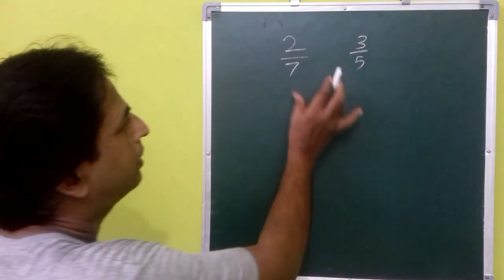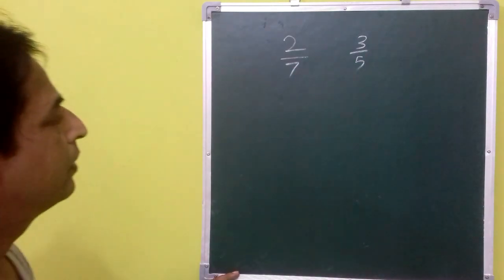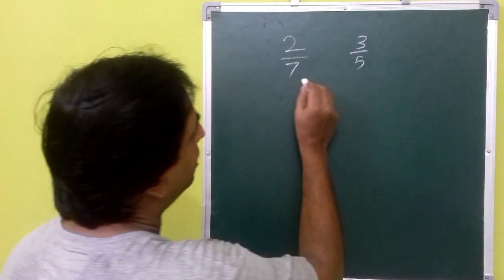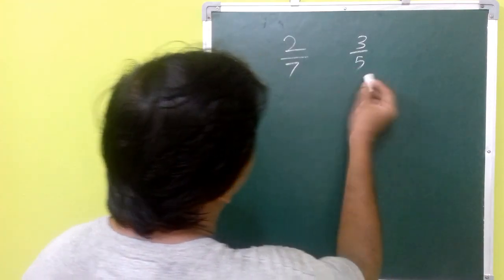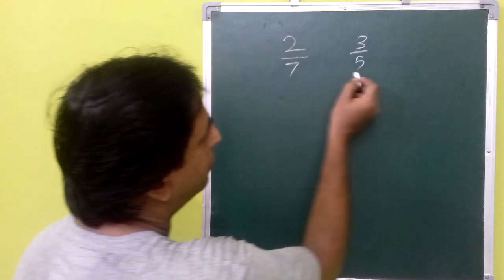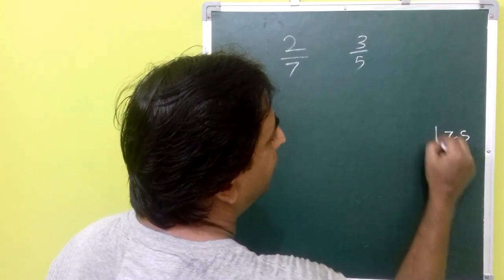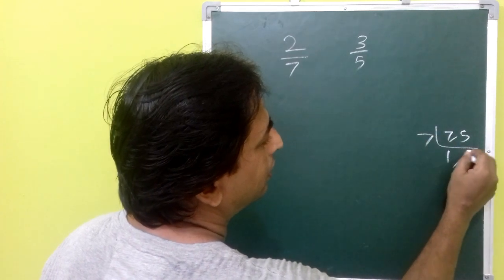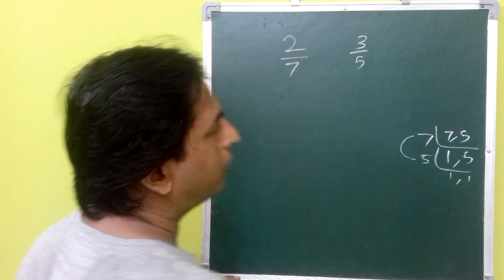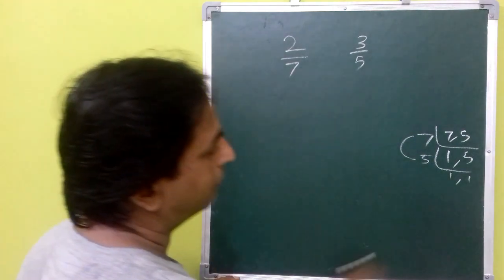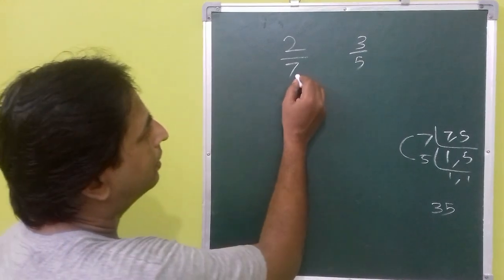Now let's say we need to find ten rational numbers between 2/7 and 3/5. First we need to make the denominators equal, so we find the LCM of seven and five. The LCM of seven and five is 35.